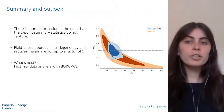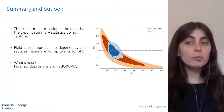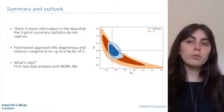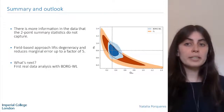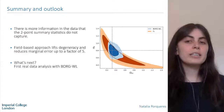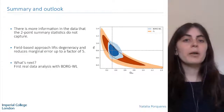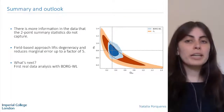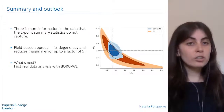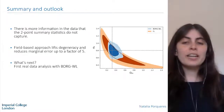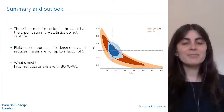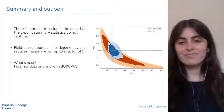In summary, there is much more information in the data than two-point statistics can capture, and if we want to make full use of observations we need methods that access this additional information. A field-based approach is one way to do that, and we have seen with Borg that we can lift the weak lensing degeneracy and get more precise constraints on cosmological parameters. The next step is to get ready for the first real data analysis. Thanks a lot.